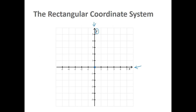To plot a point of the form (x, y), let's look at (3, negative 2). That means to start from the origin, move three units to the right in the x-direction, and then two units down in the y-direction. And that point is where we get (3, negative 2).